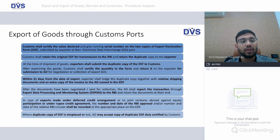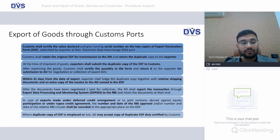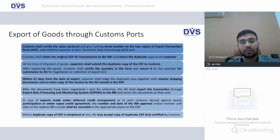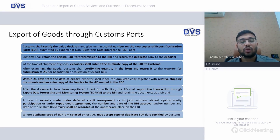The AD bank shall report the transaction through EDPMS (Export Data Processing and Monitoring System) to the RBI. In cases of exports made under deferred credit arrangements, or to joint ventures abroad against equity participation, or under rupee credit agreement, the RBI approval number and date shall be recorded on the EDF. Where the duplicate EDF is misplaced, the AD bank may accept a copy duly certified by customs. The three parties involved are: the exporter, customs, and the AD bank — and the order must be maintained chronologically.